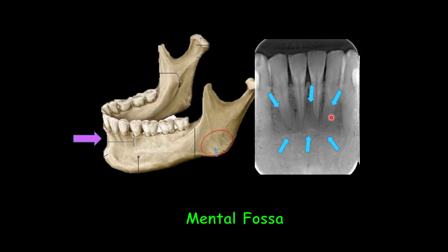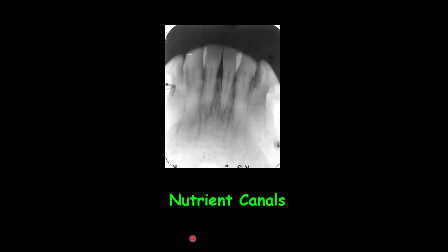The nutrient canals carry a neurovascular bundle and appear as a radiolucent line, uniform in width. They are most often seen in older patients and patients with advanced periodontitis, because bone thinning and resorption make them more evident. They are mostly seen on mandibular periapical radiographs, and can run vertically from the inferior dental canal directly towards the apex of the tooth, or they can sometimes be interdental.